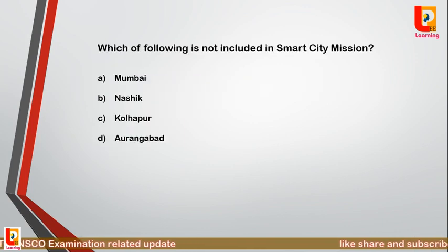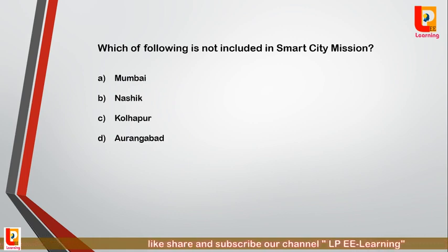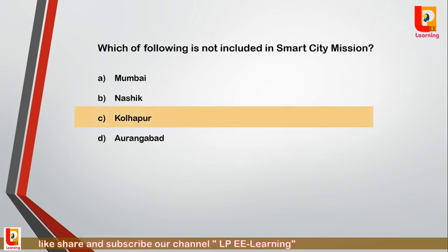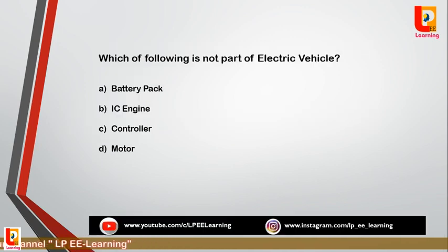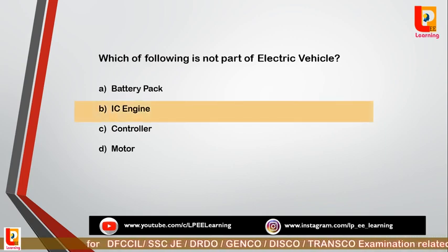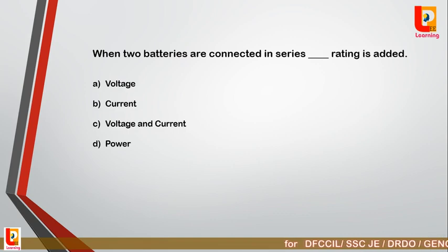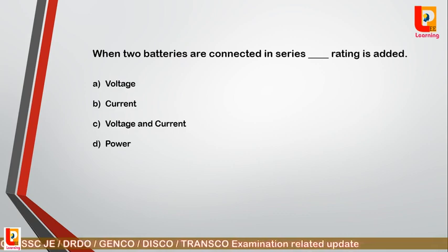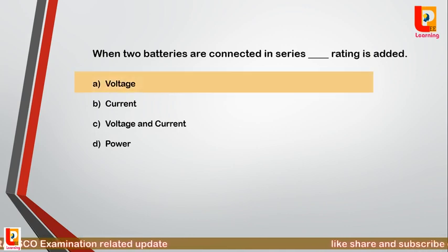Question 27: Which of the following is not included in the smart city mission — Mumbai, Nashik, Kolhapur and Aurangabad? Kolhapur is not included in the smart city mission. Question 28: Which of the following is not a part of an electrical vehicle — option A: battery; option B: IC engine; option C: controller; option D: motor? Correct answer is option B: IC engine is not a part of an electrical vehicle. Question 29: When two batteries are connected in series, which rating is added — option A: voltage; option B: current; option C: voltage and current; option D: power? Correct answer is option A: voltage is added when two batteries are connected in series.